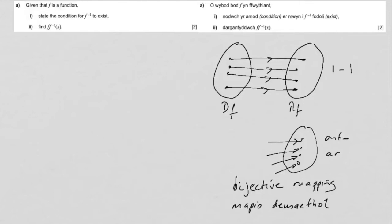So, for the inverse to exist, a mapping must be bijective. And so you could write that as your answer to part i.